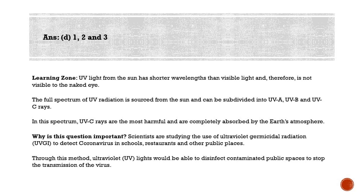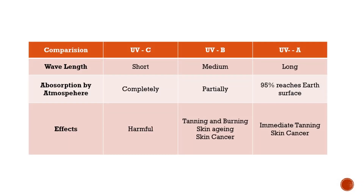Research shows that UV light kills cells and increased exposure can cause cells to become carcinogenic, increasing the risk of cancer. Comparing these rays: UVC rays have the shortest wavelength and are the most harmful, but they are completely absorbed by the earth's atmosphere and do not reach the earth's surface.